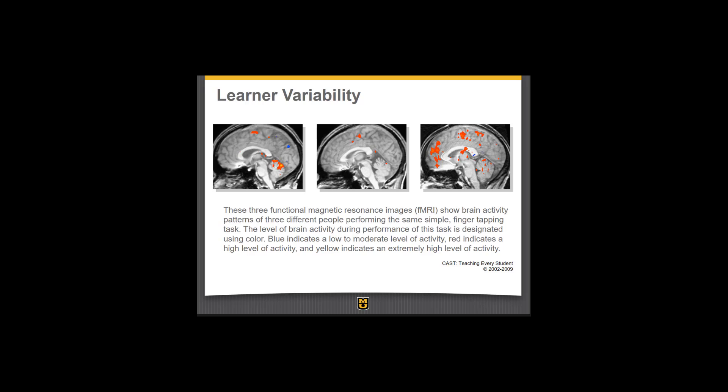The UDL framework is based on learner variability, which is a scientifically validated construct. We all use different parts of our brains to do all kinds of things — no learner is exactly like another. This slide shows how even the simplest task is processed in different parts of our brain. Three people were each asked to do the same task: tap their fingers. You'll notice by the MRI scans that different people's brains light up in different areas.